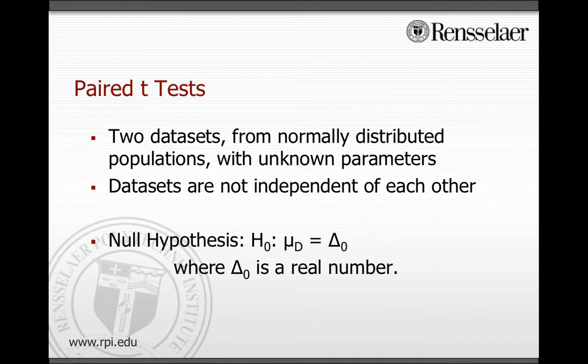μ_d, in this case, is the mean of the differences between the data sets, μ₁ - μ₂, or the average of each data point minus the corresponding data point. Note that the data sets in the paired t-test must be of the same size.